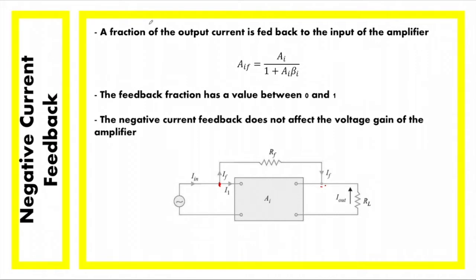The negative current feedback does not affect the voltage gain of the amplifier — the two are independent of each other. Let's derive the equation for the feedback current gain, and we can start by doing a KCL at this node here.